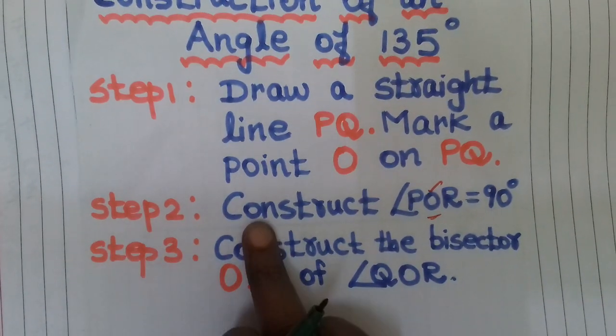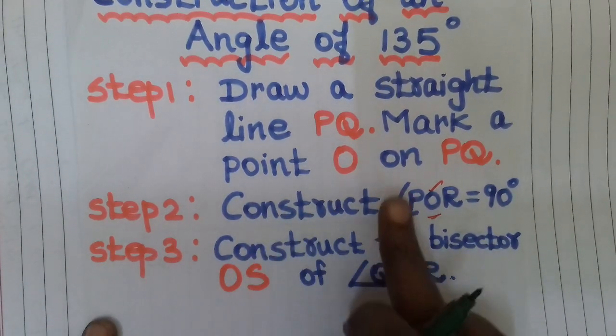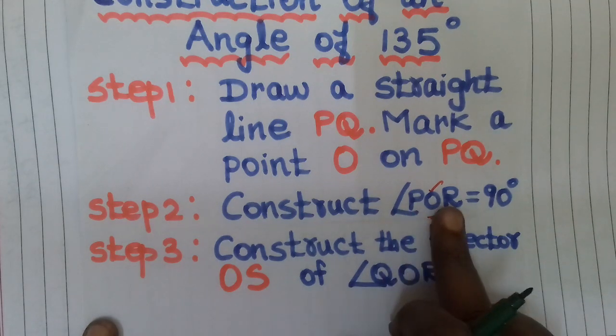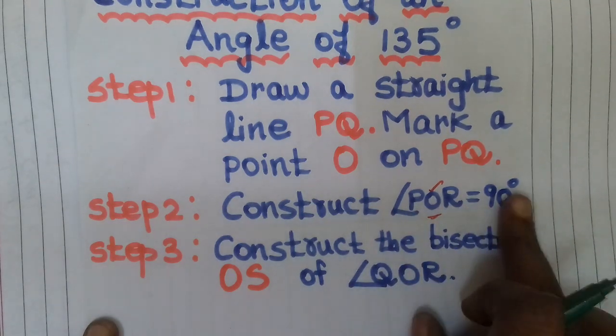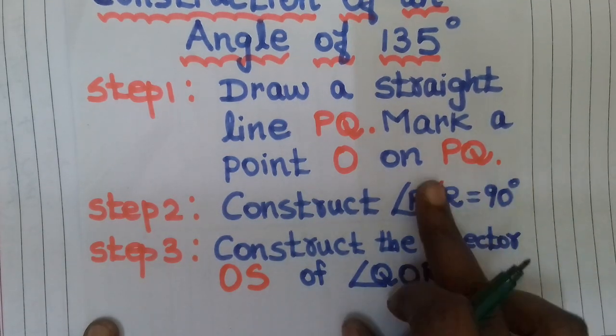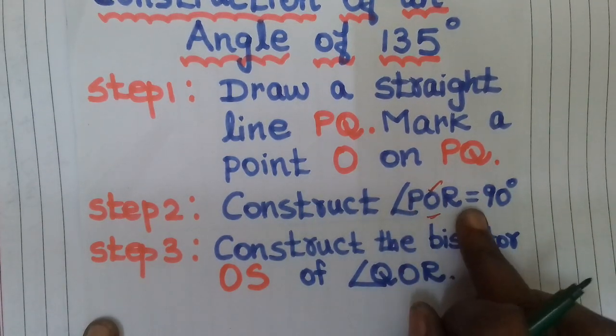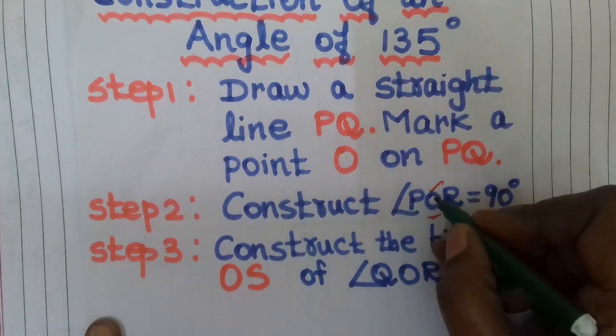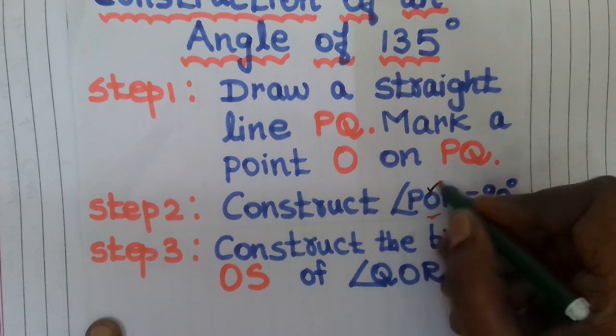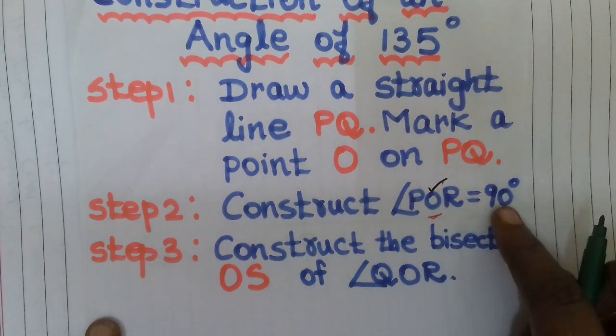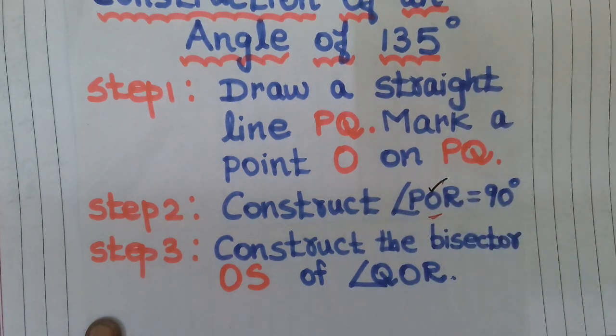Second step: construct angle POR equals 90 degrees. The vertex is O. We will construct a 90-degree angle.